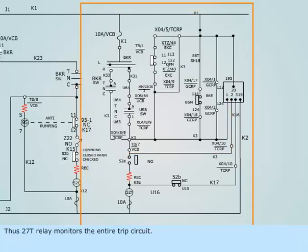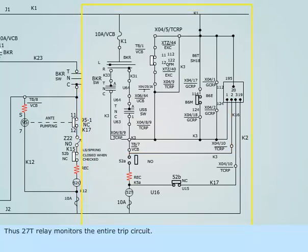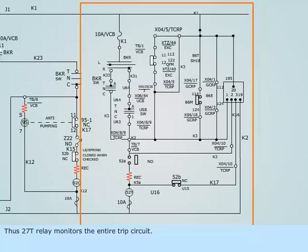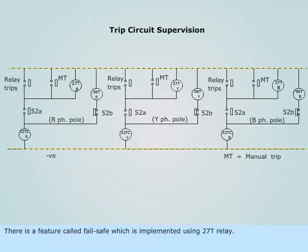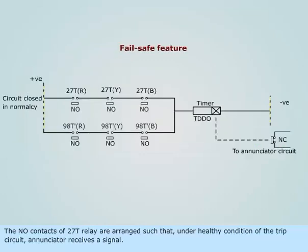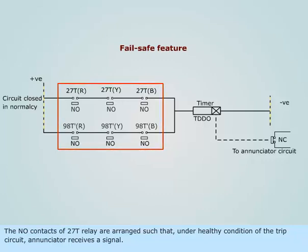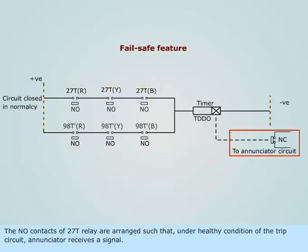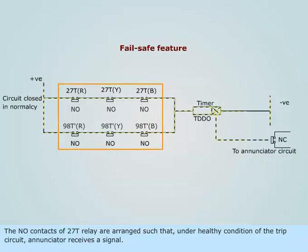Thus, 27T relay monitors the entire trip circuit. There is a feature called fail-safe which is implemented using the 27T relay. The NO contacts of 27T relay are arranged such that under healthy condition of the trip circuit, the annunciator receives a signal.